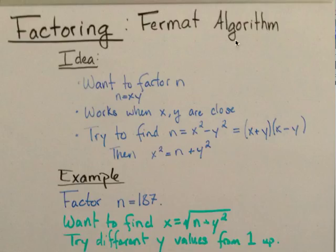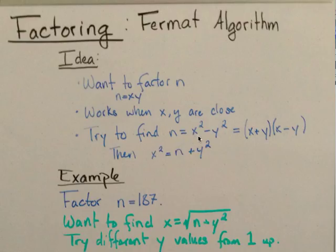The idea of this algorithm is: if we want to factor a number n which is equal to x times y — like if you had RSA and you have p and q as prime factors — however, this only works when x and y are close. The farther apart they are, the longer it takes. So we want to find n equals x squared minus y squared, which equals x plus y times x minus y, and we can solve to get x squared equals n plus y squared.